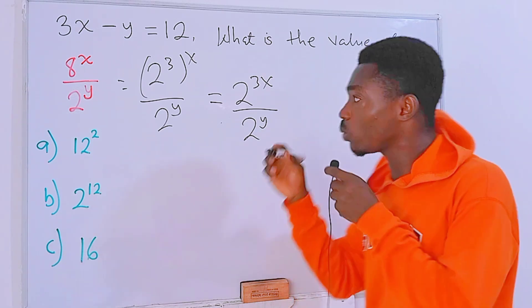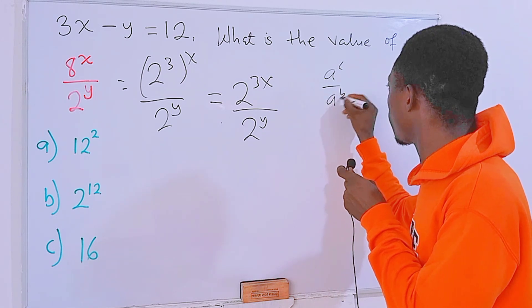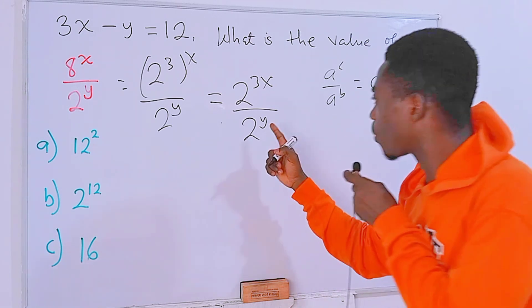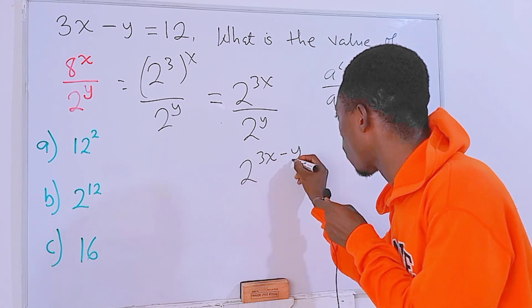Then we have to make good use of the power rule that a to the power c divided by a to the power b, this is the same as a to the power c minus b. So in fact, we can rewrite this as 2 to the power 3x minus y.